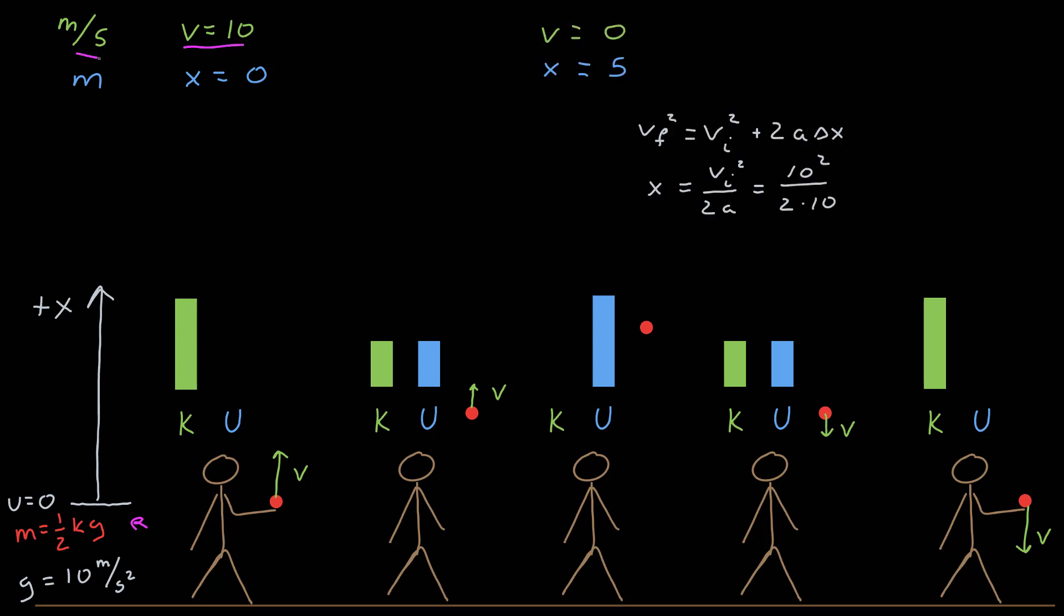At the top of the trajectory, the velocity, of course, is equal to zero, and we can find how high it went using this kinematic expression, where v final is zero. I can solve for delta x, where the initial x is zero, and it's the initial velocity squared over twice the acceleration. 10 squared is 100 divided by 20 is 5 meters.